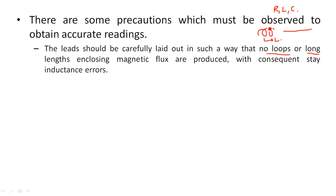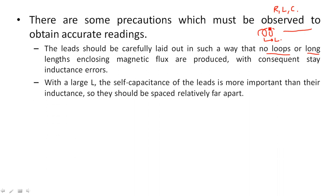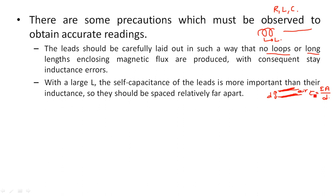When measuring inductance, the self-capacitance of the leads is more important than their inductance, so the leads should be spaced relatively far apart. If you have two wires close together, they act like two conducting plates separated by a dielectric medium — the air gap between them. This forms a capacitance given by C = εA/D, where ε is the permittivity, A is the area of the wire, and D is the separation distance.